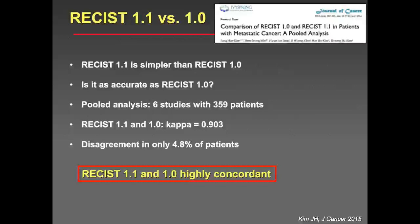RECIST 1.1 is simpler than RECIST 1.0 because you have only five lesions in total and a maximum of two lesions per organ. A large pooled analysis of six studies with more than 300 patients found a very good inter-observer reliability with a kappa value of 0.903. In only 4.8% of patients was there disagreement between RECIST 1.1 and RECIST 1.0. These two systems are highly concordant, and the new RECIST is less work because you have fewer lesions to measure.